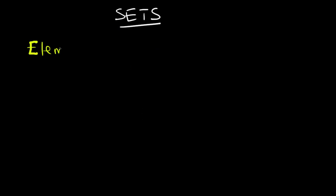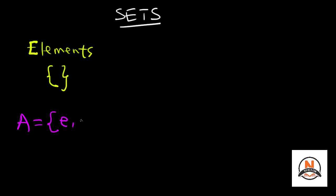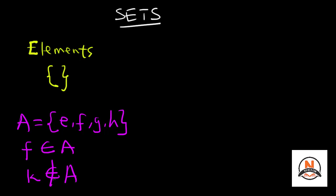Objects in a set are called elements of the set, and we write the elements of a set in curly brackets. Let's consider set A with elements E, F, J, and H — we put them in curly brackets with commas in between to show each one is a separate element. Picking element F, we can say F is a member of set A, or F belongs to set A. For letter K, which is not in set A, we say K is not a member of set A, or K does not belong to set A.